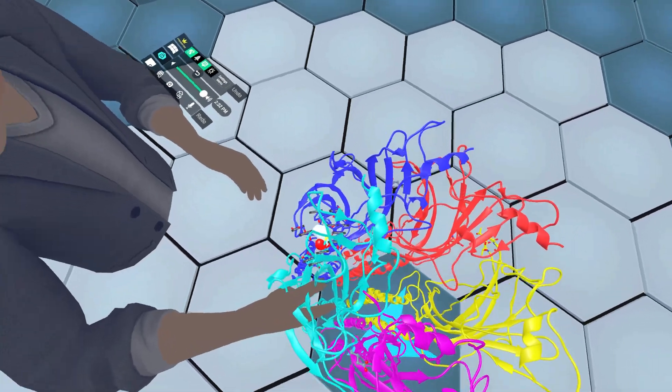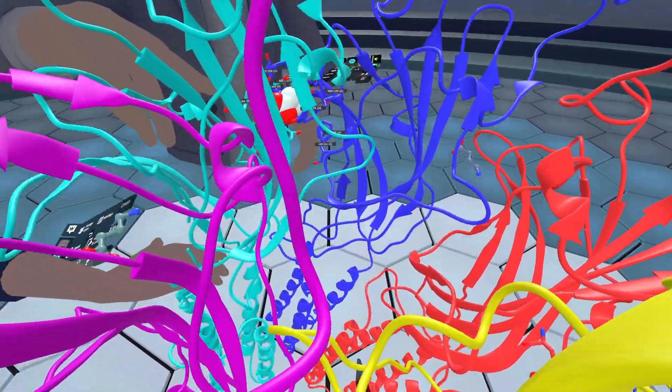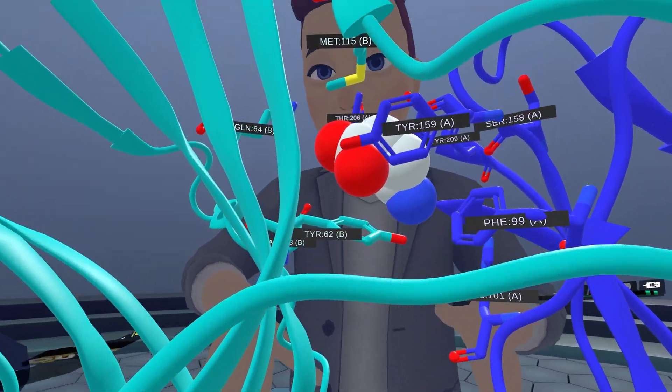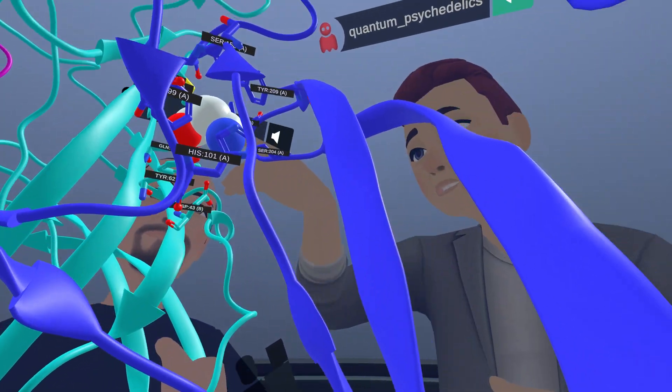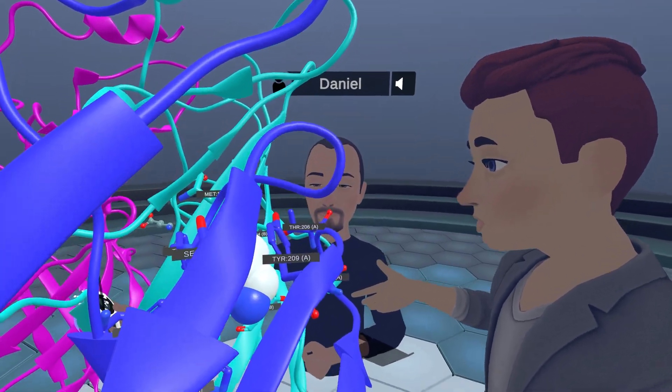In between where the proteins connect, so between the blue and this cyan, I guess we might call that color, protein subunit, there's a binding site. And all these binding sites on GABA occur between these junctions where the two proteins connect.